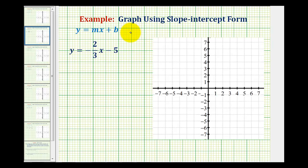We want to graph the line using the slope-intercept form of a line, which is y equals mx plus b, where b is the y-intercept of the line and m is the slope of the line.